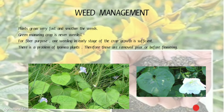Weed Management: Sunhemp plants grow very fast and smother the weeds. The green manuring crop is never weeded. For fiber purpose, one weeding in the early stage of crop growth is sufficient. There is a problem of Ipomoea plants; therefore, they are removed prior to sowing.